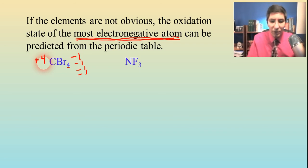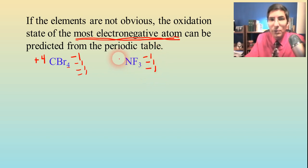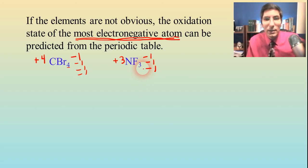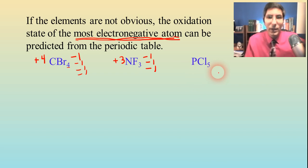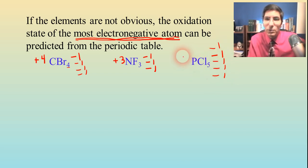Nitrogen trifluoride: fluorine is the most electronegative of those two, so it's what you'd expect from the periodic table — a minus one. We have three of those for a total of negative three, which means nitrogen would have to be positive three. You probably wouldn't have expected nitrogen to be positive three just by looking at the periodic table. Or phosphorus pentachloride: chlorine is the more electronegative element, so we predict chlorine is negative one. We've got five of those — that's negative five — so phosphorus would have to be positive five. We use what we know to figure out what we don't know.